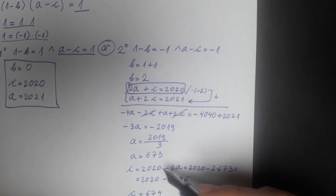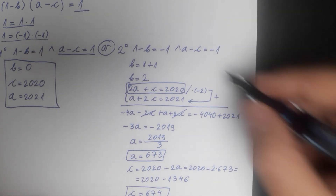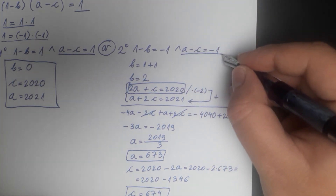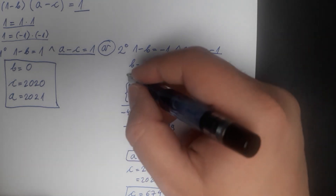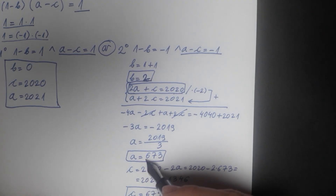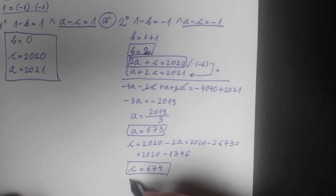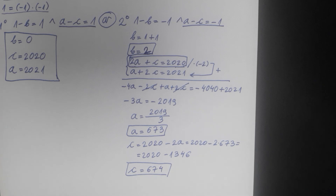We can verify by returning a equals 673 and c equals 674 into the unused equation, and we confirm it is satisfied. So the second solution is b equals 2, a equals 673, and c equals 674. These are the two solutions to our problem. Thank you for watching — let me know in the comments what you think, please like, share, and subscribe.